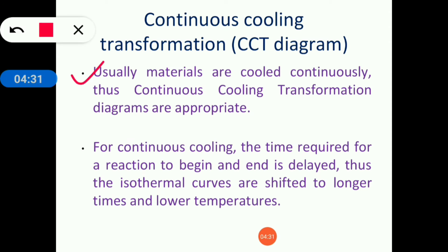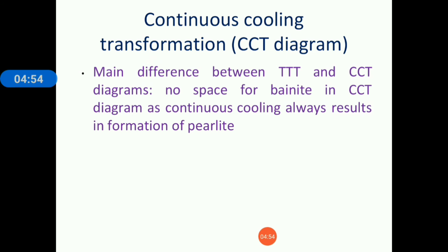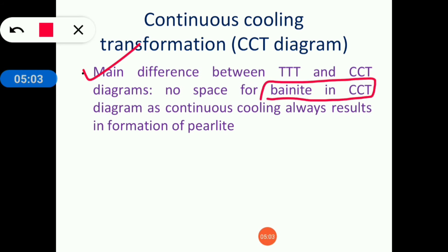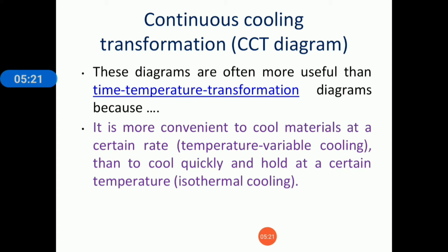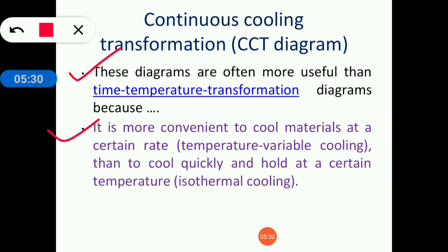Materials are usually cooled continuously, so CCT diagrams are appropriate for continuous cooling. The time required for a reaction to begin and end is delayed, and the isothermal curves are shifted to longer times and lower temperatures. The main difference between TTT and CCT diagrams is that there is no bainite region in the CCT diagram, as continuous cooling always results in the formation of pearlite. CCT diagrams are often more useful than TTT diagrams because it is more convenient to cool a material at a certain rate than to cool quickly and hold at a constant temperature as in isothermal cooling.